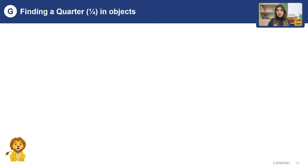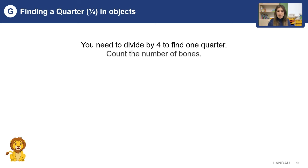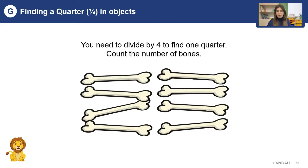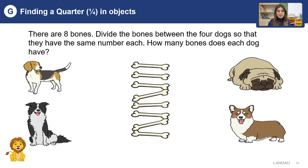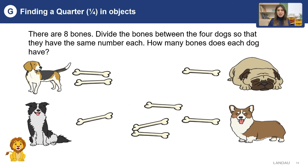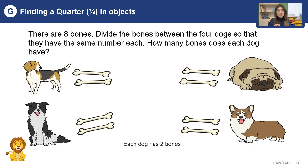Now let's find a quarter in objects. You need to divide by four to find one quarter. Count the number of bones — how many bones can you see? There are eight bones in the picture. Divide the bones between four dogs so that they have the same number each. We can find it like: one for you, one for me, one for him, and one for her. At the end, we find that all the dogs have two bones. It means that a quarter of eight is two.